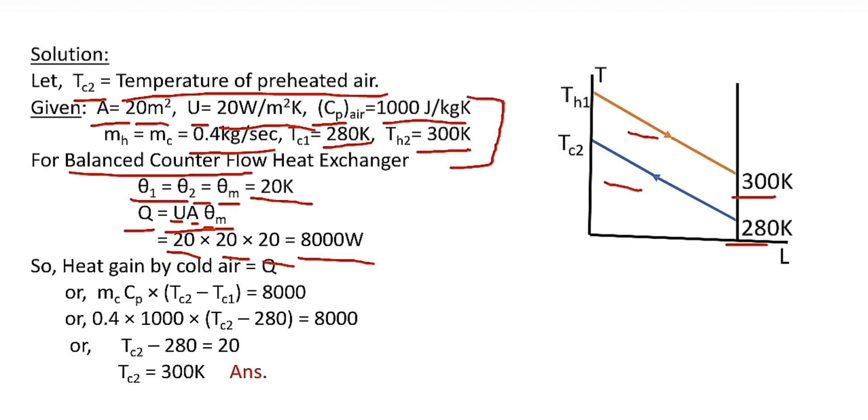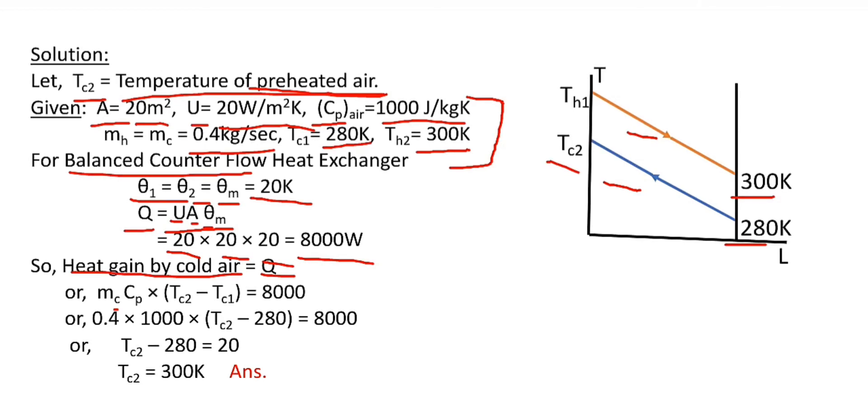Here I am equating heat gain by cold air to Q, the heat transfer rate for the given heat exchanger, because we have to find the temperature of preheated air TC2. Heat gain by cold air = m Cp (TC2 - TC1), where TC2 is unknown and m, Cp, and TC1 are given.